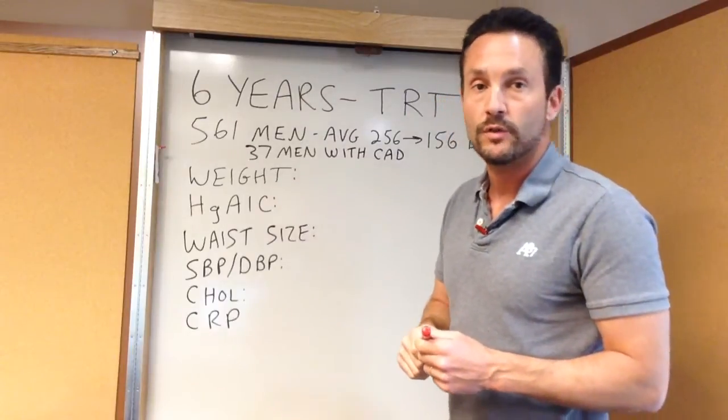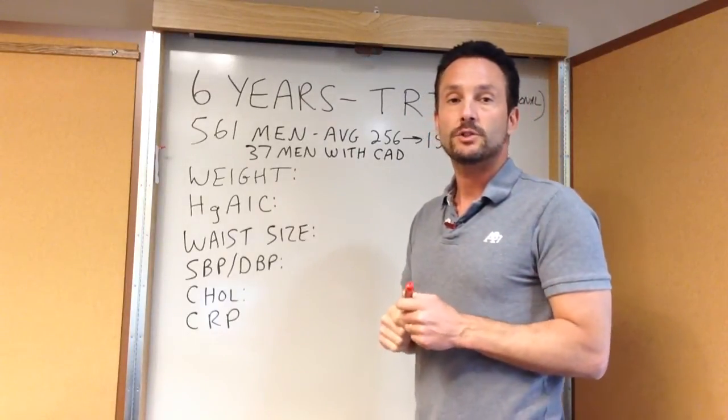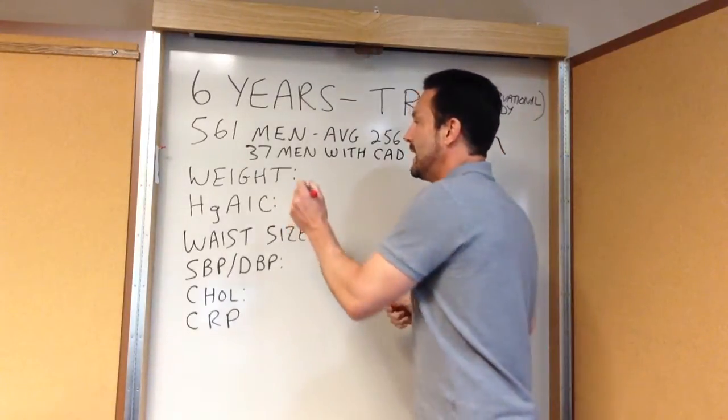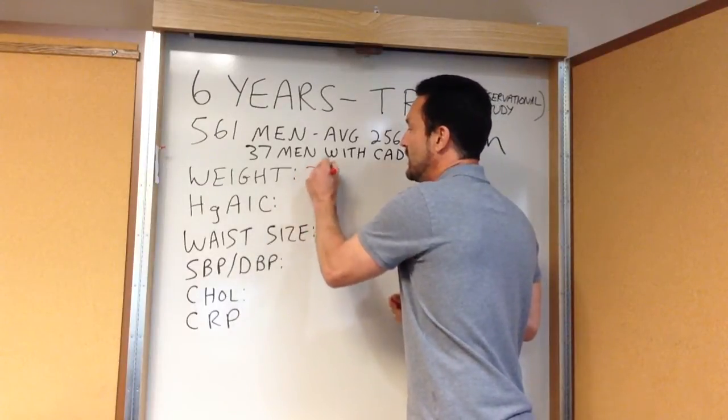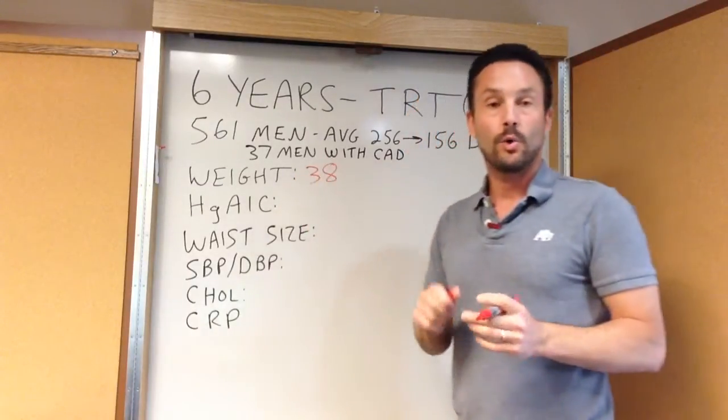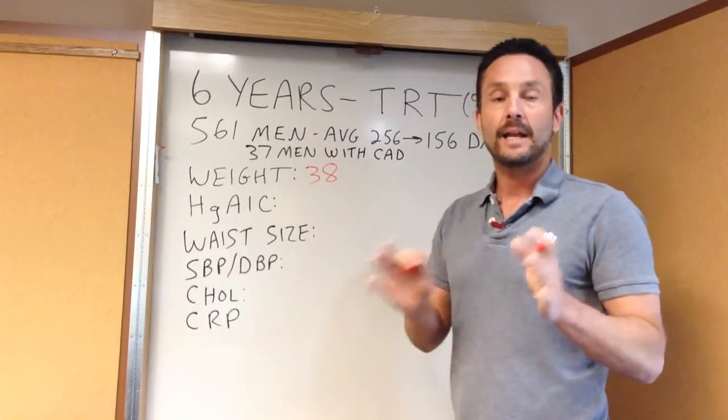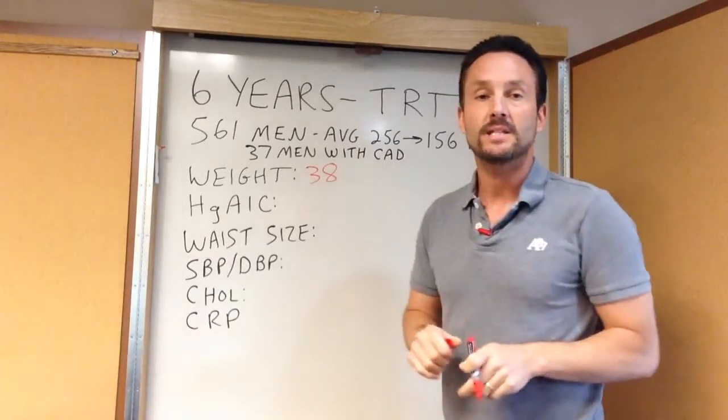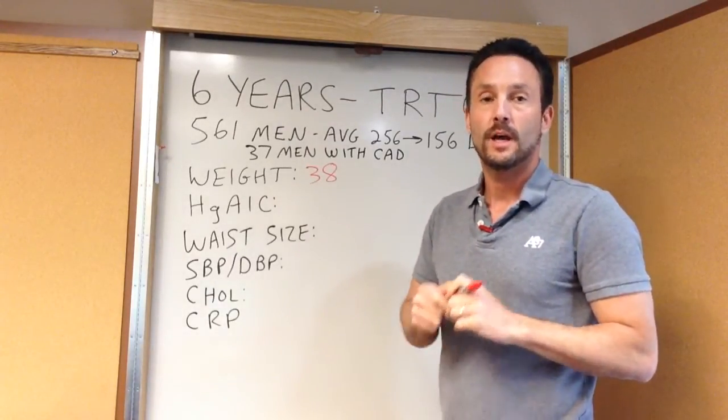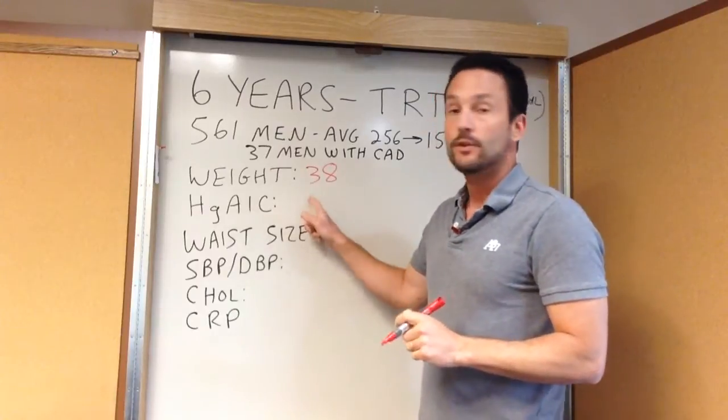The most amazing thing was over six years time, the diabetics who took testosterone had an average weight loss of 38 pounds. Within six years time, on average, the men dropped and maintained a 38-pound weight loss from beginning to end of the study.